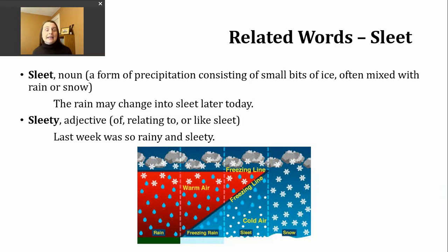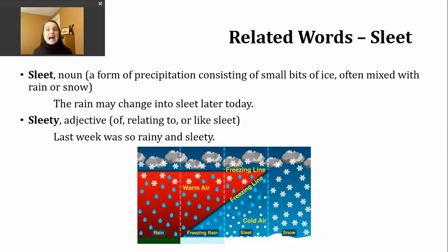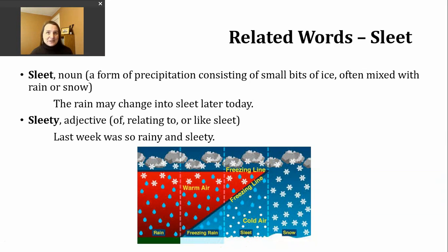I added a picture here in case you're wondering about the difference between all this different precipitation. Starting on the left side when the air temperature is very warm — 32 degrees Fahrenheit or above, or zero degrees Celsius and above — precipitation is going to fall as rain. When we have really warm air closer to the clouds but cold air closer to the ground, then sometimes we will get freezing rain. If there's just a little bit of warm air under those clouds but it's mostly cold air — under 32 degrees Fahrenheit or under zero degrees Celsius — that's when you're going to get sleet. And finally, if we only have cold air, then we'll get snow.